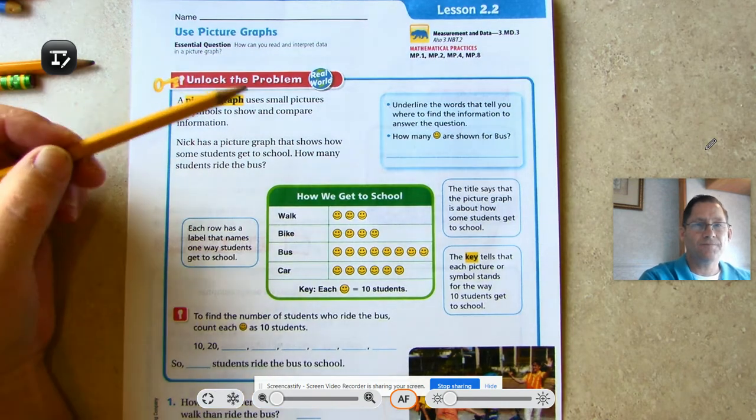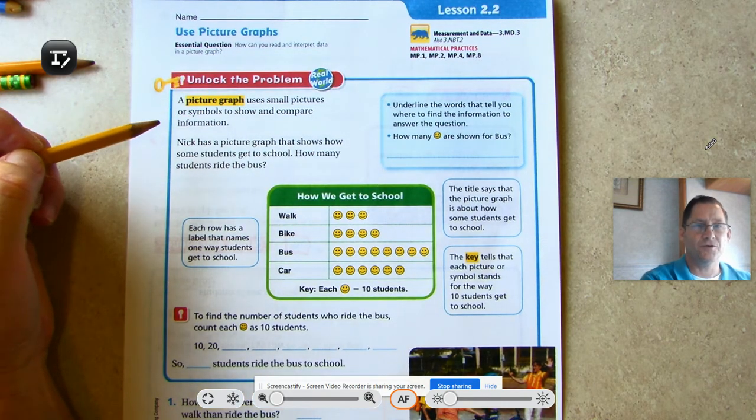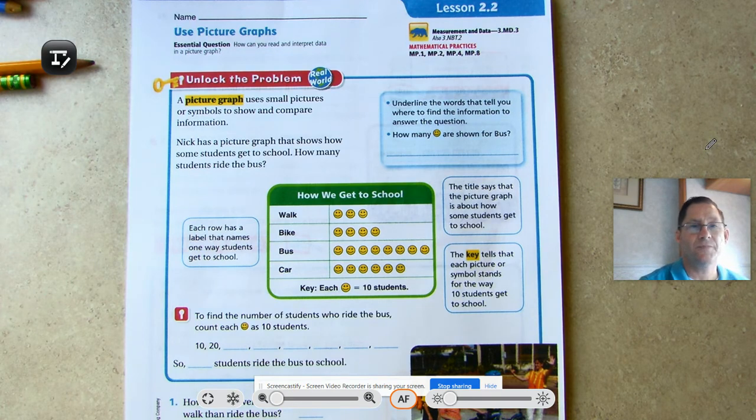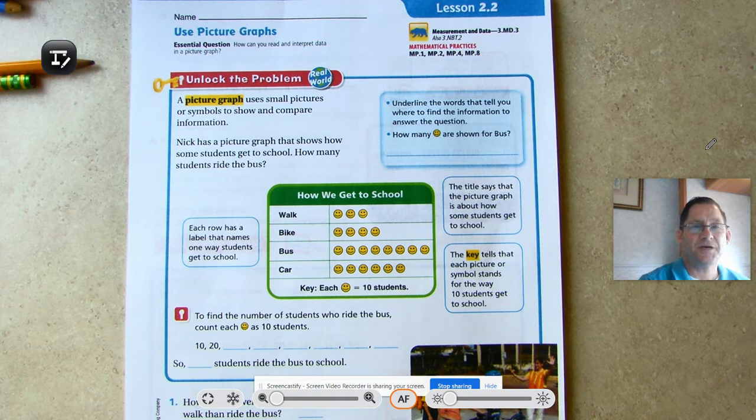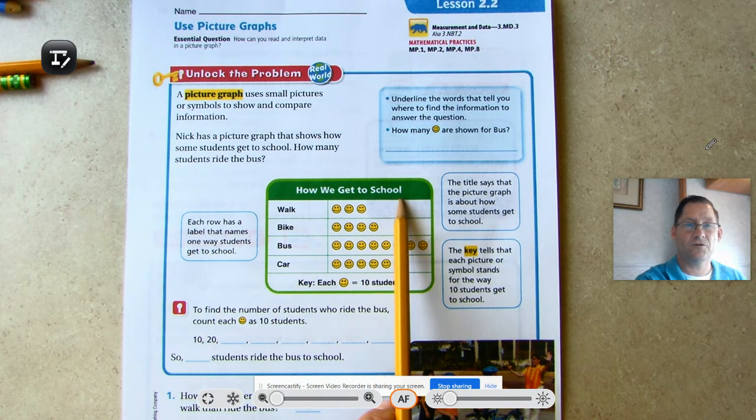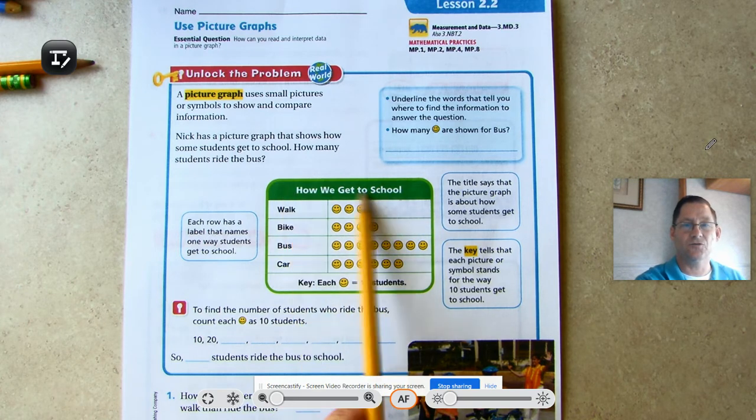So I unlock the problem. A picture graph uses small pictures or symbols to show and compare information. Nick has a picture graph that shows how some students get to school. How many students ride the bus?